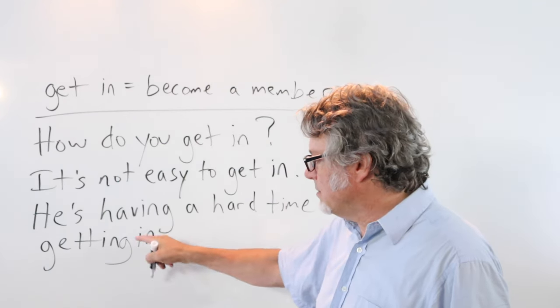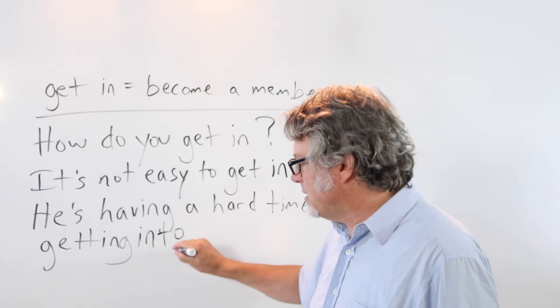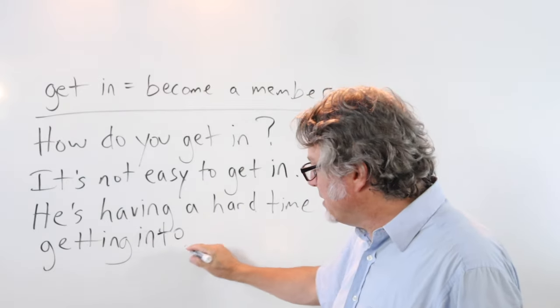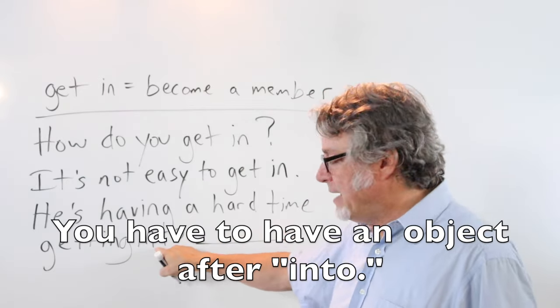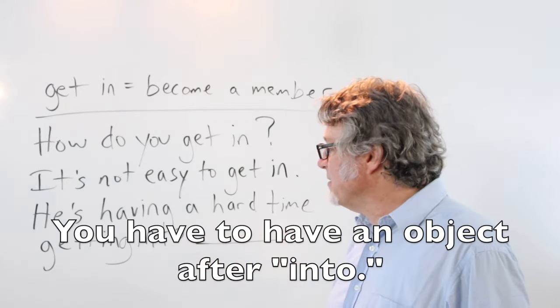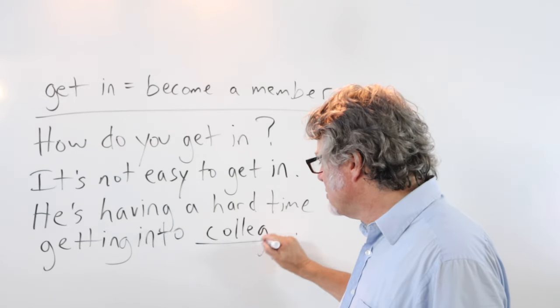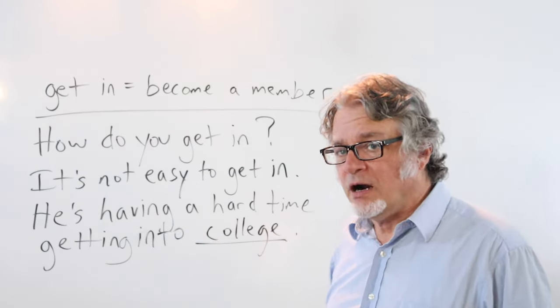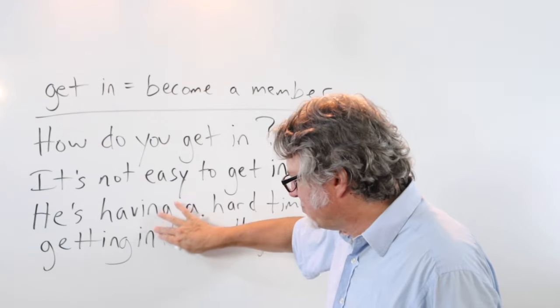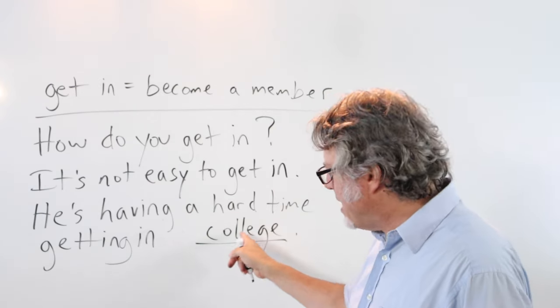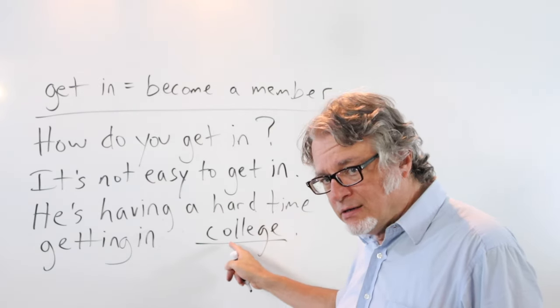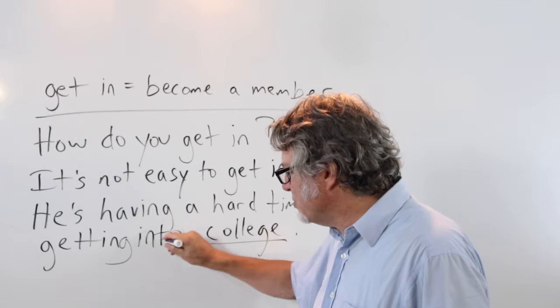And again, if you want to say into that's okay, but then you'd have to have an object after into. He's having a hard time getting into college, or he's having a hard time getting in college. That's okay, but if you do have an object here, then I think into sounds better.